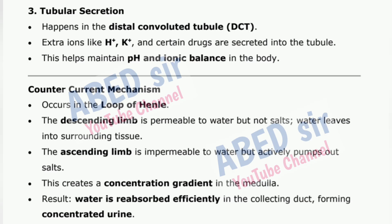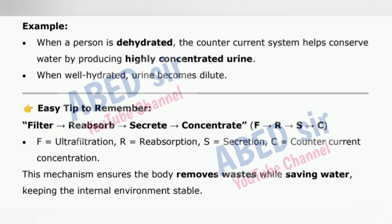3. Tubular secretion — happens in the DCT. Extra ions like H⁺, K⁺, and certain drugs are secreted into the tubule. This helps maintain pH and ionic balance in the body. Countercurrent mechanism — occurs in the loop of Henle. The descending limb is permeable to water but not salts, so water leaves into surrounding tissue. The ascending limb is impermeable to water but actively pumps out salts, creating a concentration gradient in the medulla. Result: water is reabsorbed efficiently in the collecting duct, forming concentrated urine. Example: when a person is dehydrated, the countercurrent system helps conserve water by producing highly concentrated urine.